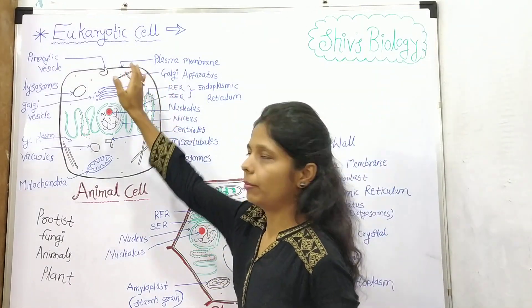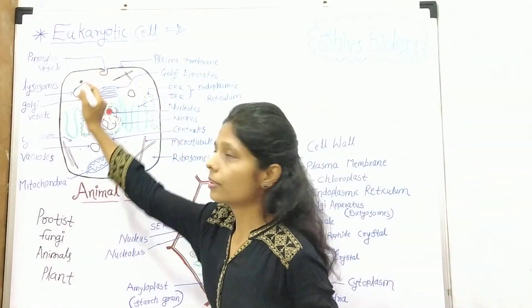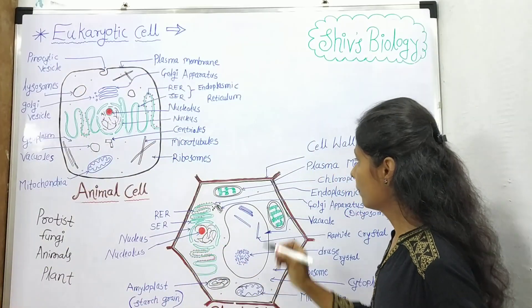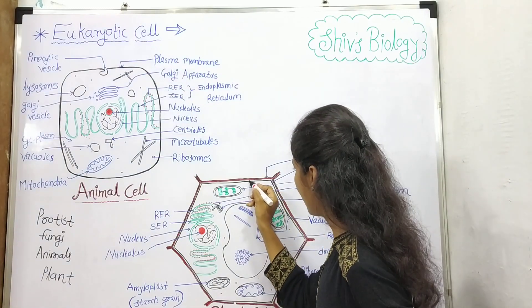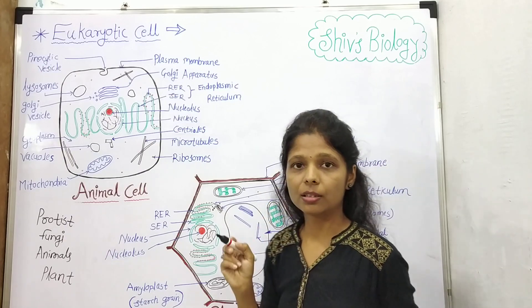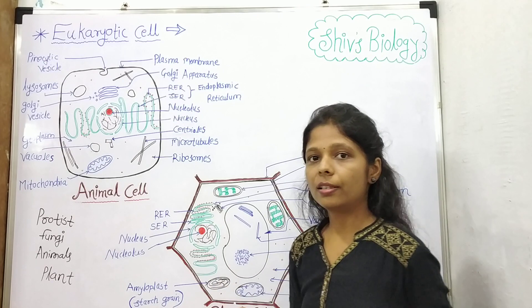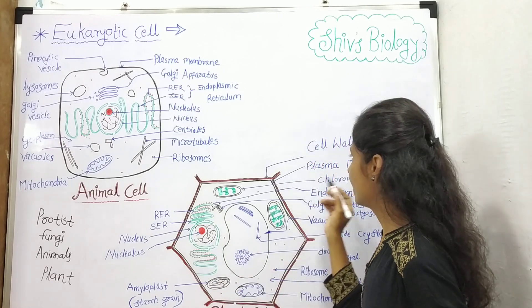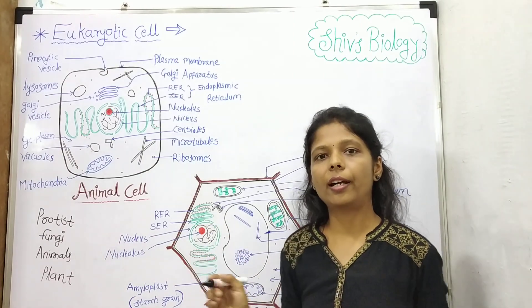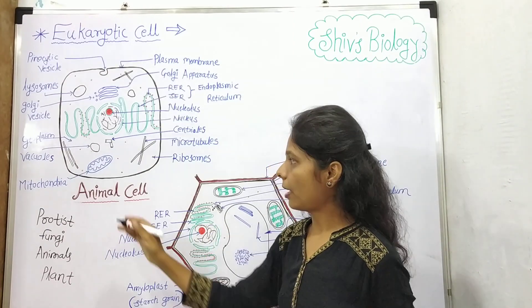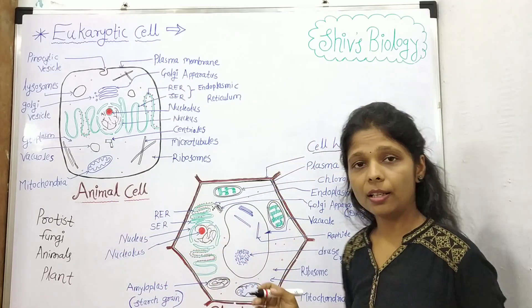This is the plasma membrane — the boundary covering the animal cell is known as the plasma membrane. Also in the plant cell, this blackish boundary beneath the cell wall is known as the plasma membrane or cell membrane, and it is living. Then there is the cell wall — the cell wall is present only in plant cells and fungus cells; in animal cells the cell wall is absent, and the cell wall is dead.